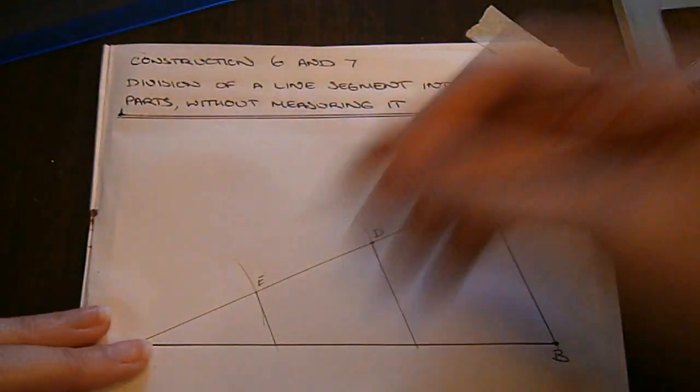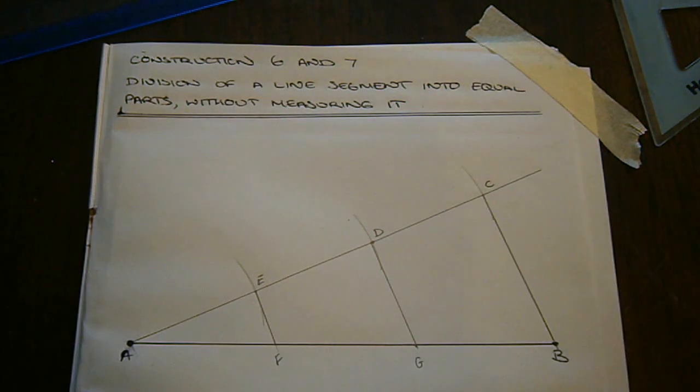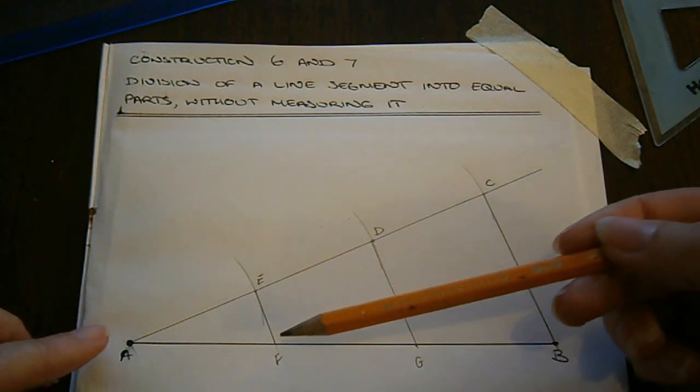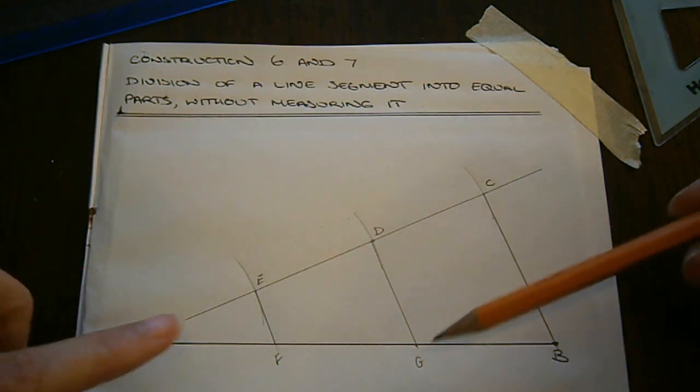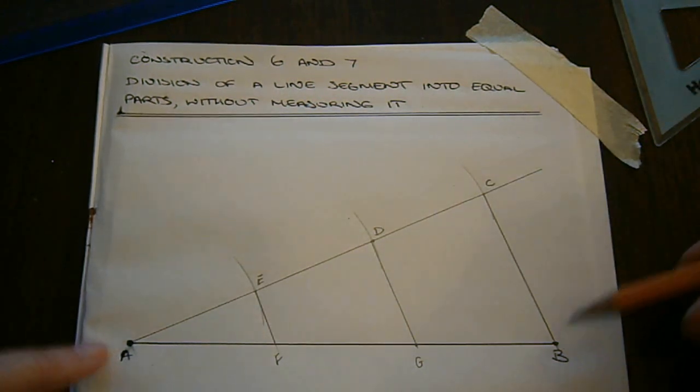These points, F and G, are the intersection points between these parallel lines and the line AB. So AF, FG, and GB are each equal divisions of this original line segment AB.